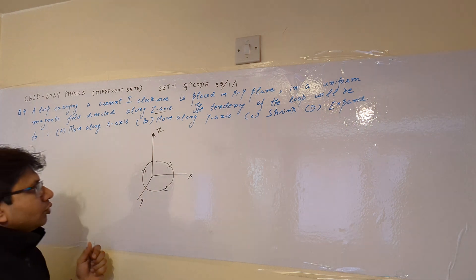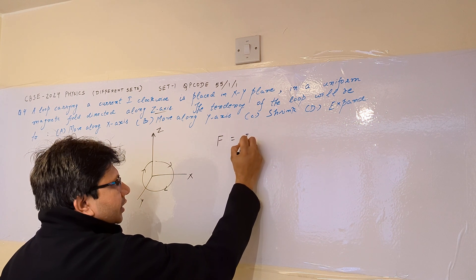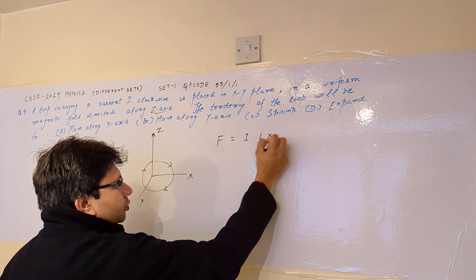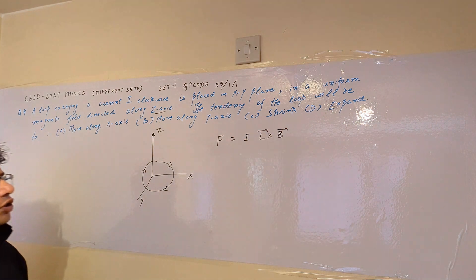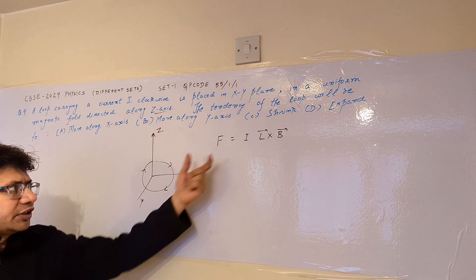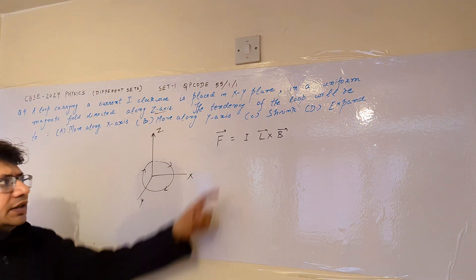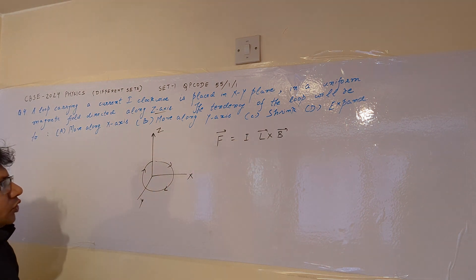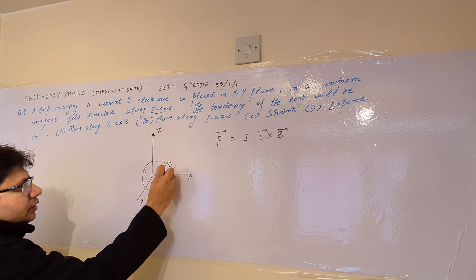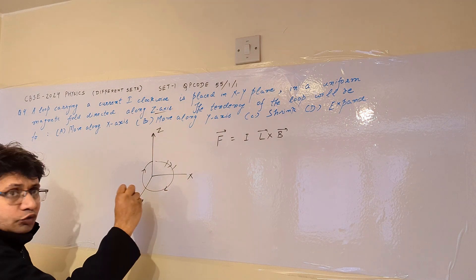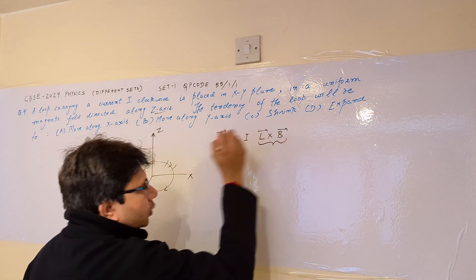In this problem we use the concept that F equals IL cross B. For a particular current-carrying loop we can use this formula: the force is equal to IL cross B. Now if we choose a certain element of this loop and calculate the direction of force, the direction of force is given by the vector cross product.